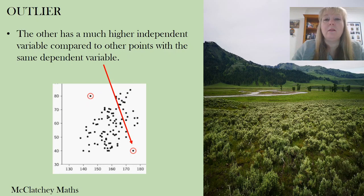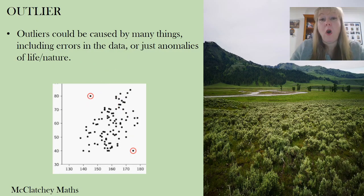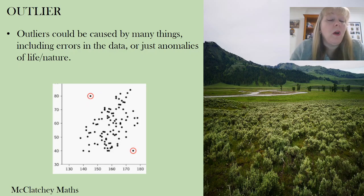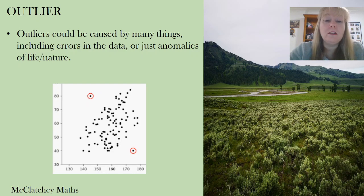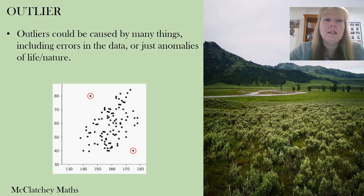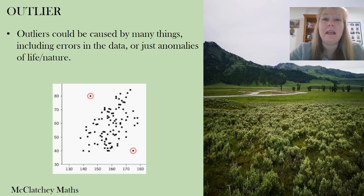There are different reasons why outliers exist. They could indicate errors in the data — perhaps someone measured something incorrectly. Or there can be anomalies of nature; for example if this is height versus weight, the outlier on the left could represent someone who is quite short but quite heavy, and on the right someone very tall and very skinny. So it's not always a good idea to eliminate outliers from your data completely.